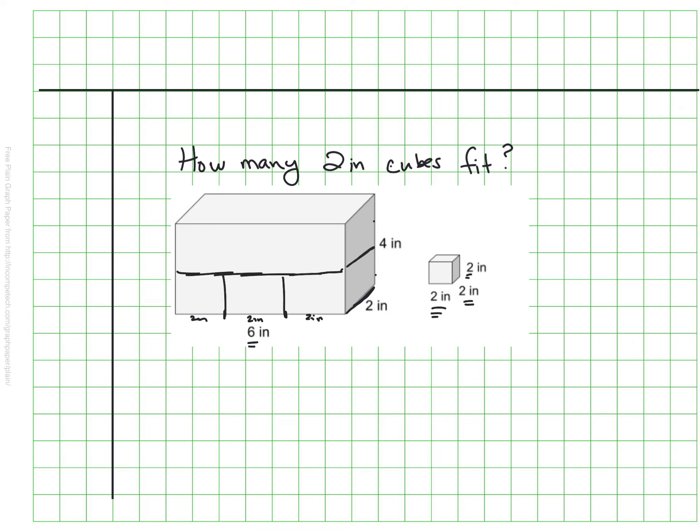So it looks something more like this. And if I kept this going, I'd be able to get 3 across, 1 deep, and 2 high if I were building it with 2-inch by 2-inch by 2-inch cubes, which means this time along the bottom, I would have 3 times 1 would be the area along the bottom.